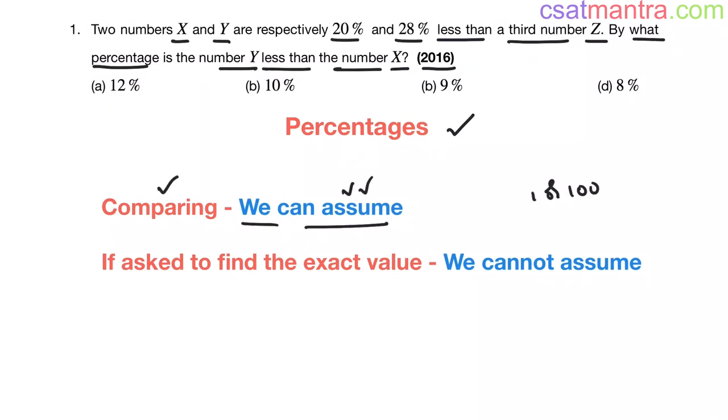If we are asked to find the exact value of any other number, in that case we cannot assume the numbers. In this problem, we are comparing X and Y with Z and we are asked to find how much Y is less than X. So we do not need to worry about what are the exact values of X, Y and Z. We can assume them and then find out how much X is less than Y or Y is less than X.